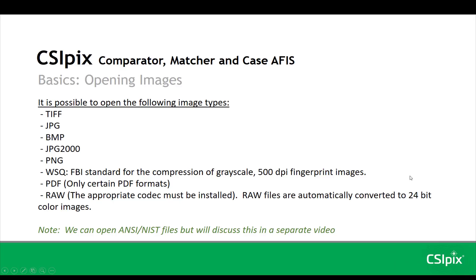It's possible to open images of the following types: TIFF, JPEG, BITMAP, JPEG2000, PNG, WSQ — which is an FBI standard for compression of grayscale 500 dpi fingerprint images — certain PDFs, and raw images from your camera, if you have the appropriate codec installed on your computer, which you would have gotten with your camera.